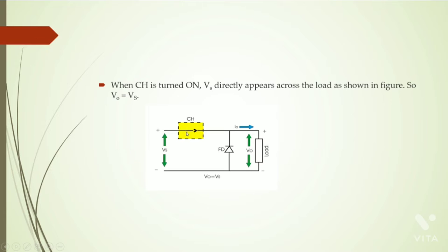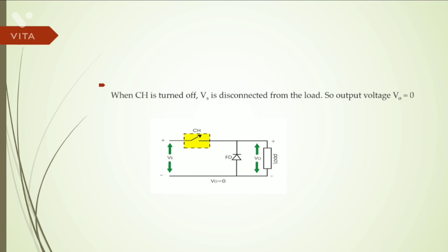When chopper is turned on, the input voltage Vs directly appears across the load as shown in the figure. So Vout equals Vs. When the chopper is turned off, Vs is disconnected from the load, so the output voltage Vout equals zero.